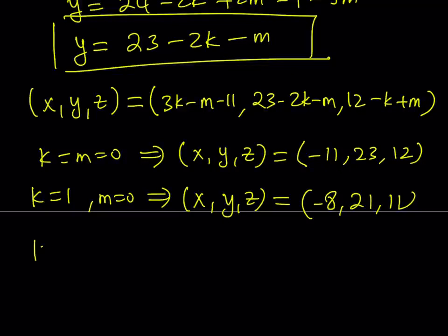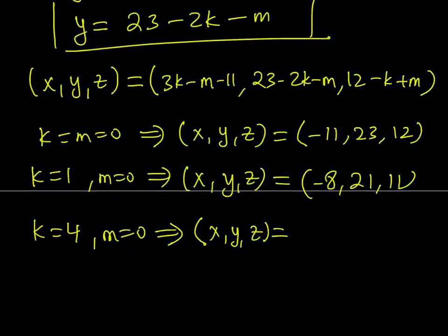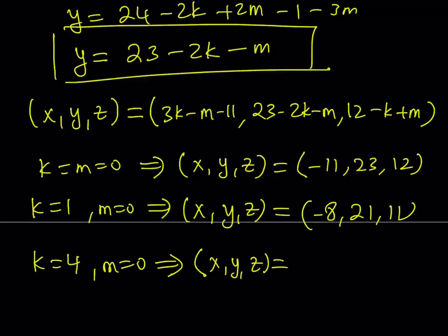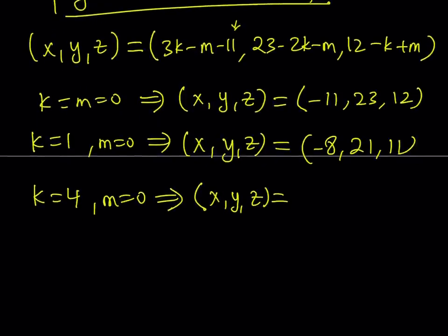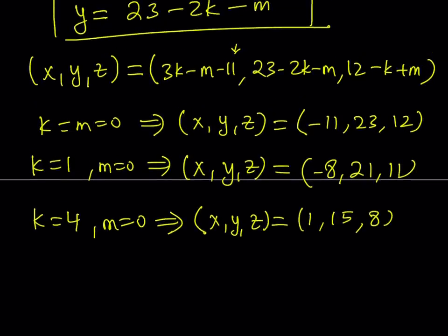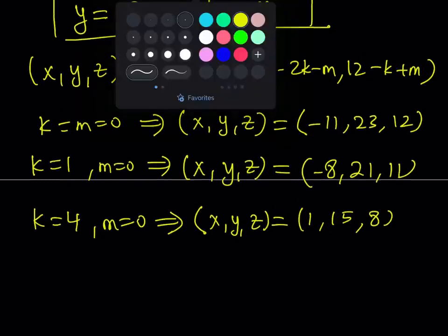And then finally, let's just do something different so that we can get a nicer solution. I'll tell you why it's nicer. If you do k equals 4 and m equals 0. And notice that I'm always trying to stick to 0. Sometimes you don't have to do it, but I'm just going to show you something here. The reason why I pick a large k here is because I want to get rid of the negativity of the 11 here so that I can get a positive answer. That's the goal. And we get 1, 15, 8. And this is going to be my positive solution.